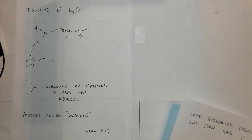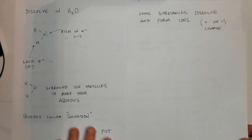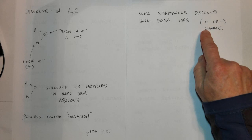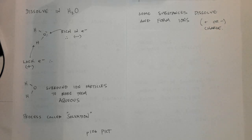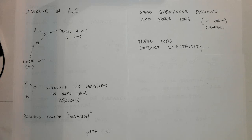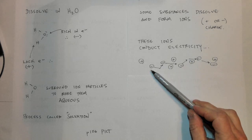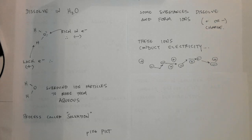Some of these substances that dissolve form ions. Ions are things that have a positive or a negative charge because they've gained or lost electrons. These ions conduct electricity. These ions conduct electricity because electricity is nothing more than positive or negative charges bouncing off of one another and being pushed through whatever medium they happen to exist in.